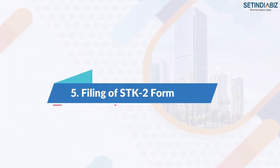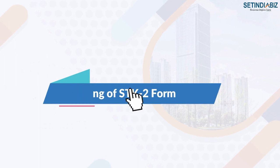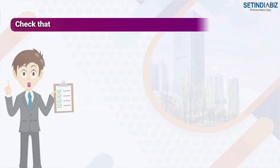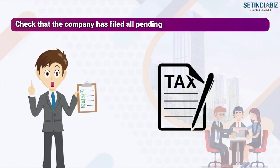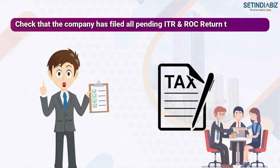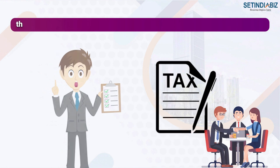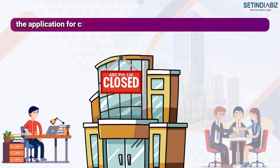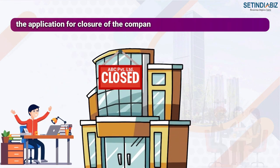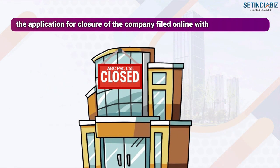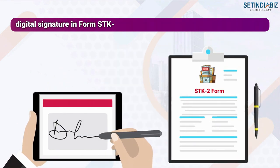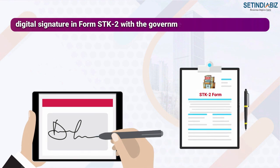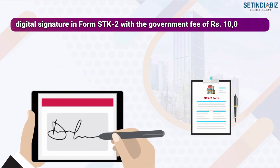Step 5: Filing of STK-2 form. Ensure that the company has filed all pending ITR and ROC returns. The application for closure of the company is filed online with a digital signature in form STK-2 with a government fee of Rs 10,000.